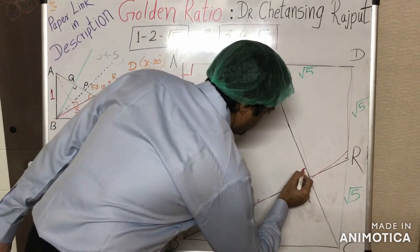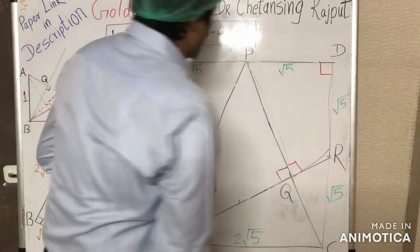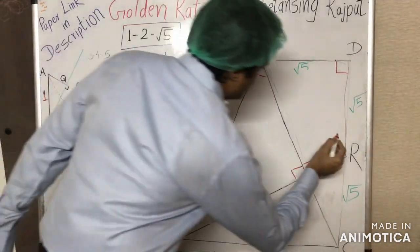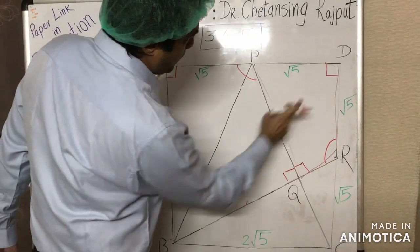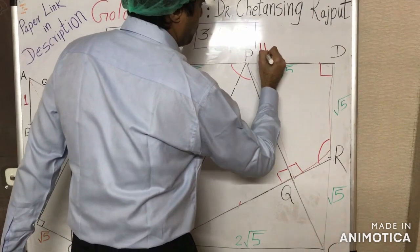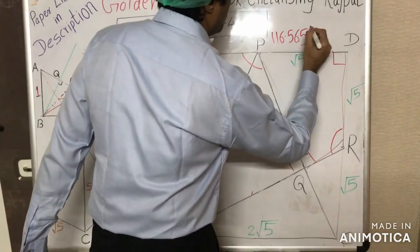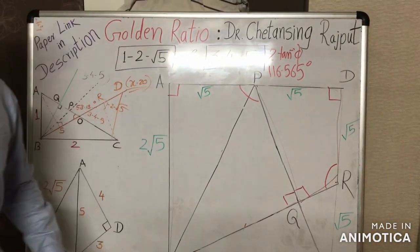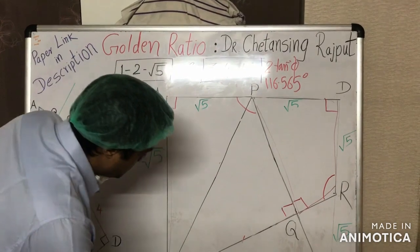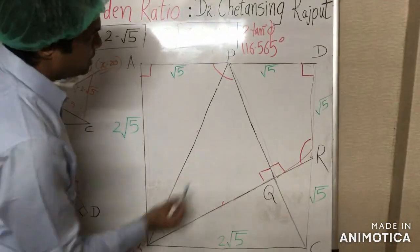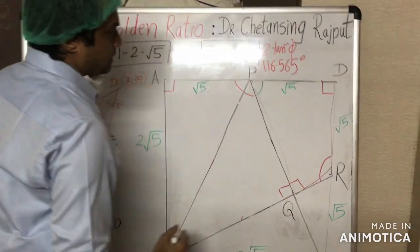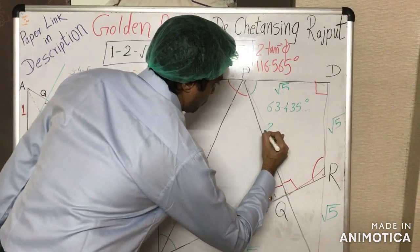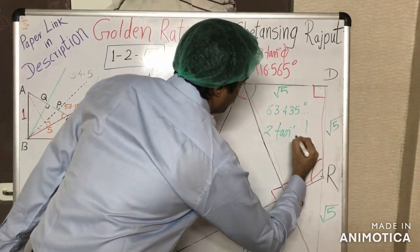The other two angles of this irregular quadrilateral — angle APQ and angle DRQ — are both precisely equal to 116.565°, which equals 2 × 22.5°... wait, which equals twice the arctangent of the golden ratio. And the angles ABQ and DPQ are precisely 63.435° and so on degrees, which is twice the arctangent of the inverse of the golden ratio. So many interesting things are present here.